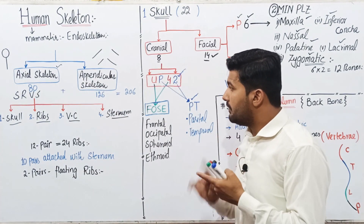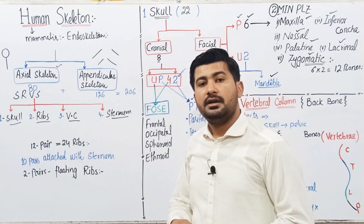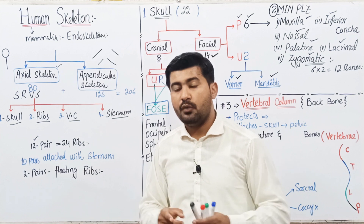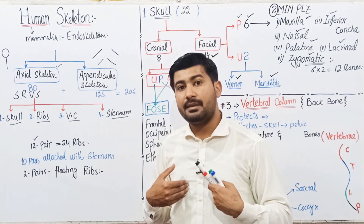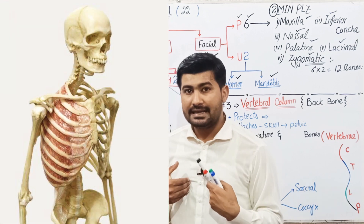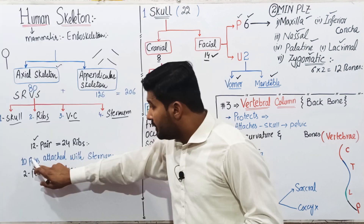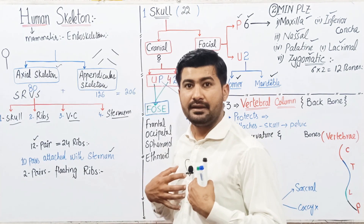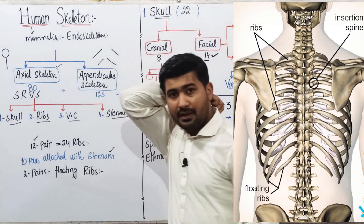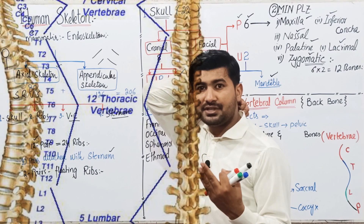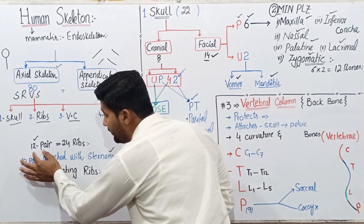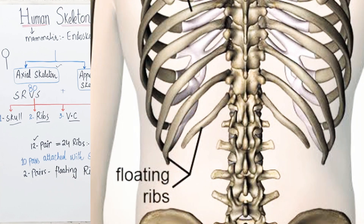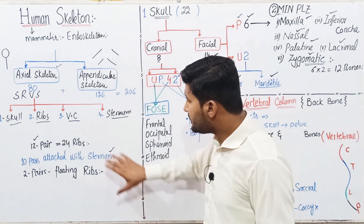Ribs are 24 in number, present as 12 pairs. These 12 pairs make our chest cavity — a semi-vacuum cavity that protects the lungs, heart, and other vital organs. Ten pairs of ribs are attached to the sternum at the front and to the backbone (thoracic vertebrae) at the dorsal side. The remaining two pairs are called floating ribs because they are not directly attached to the sternum.